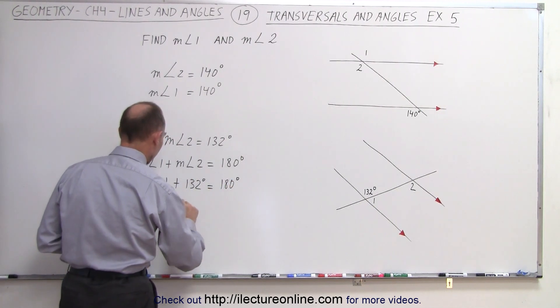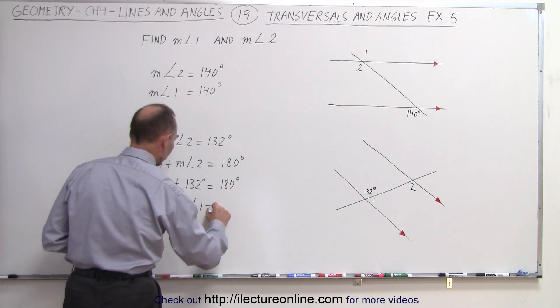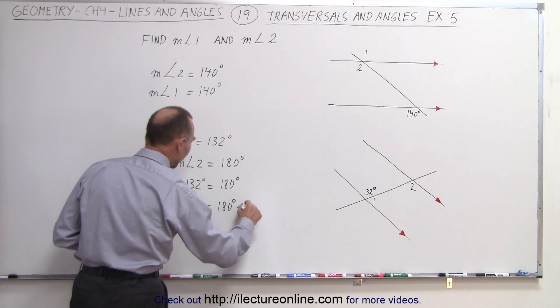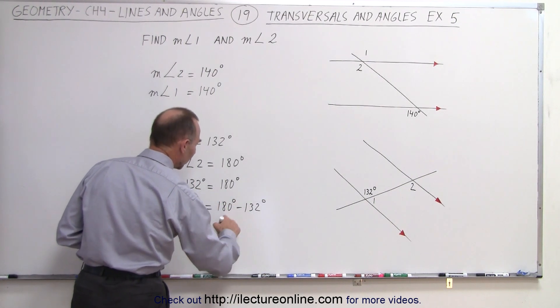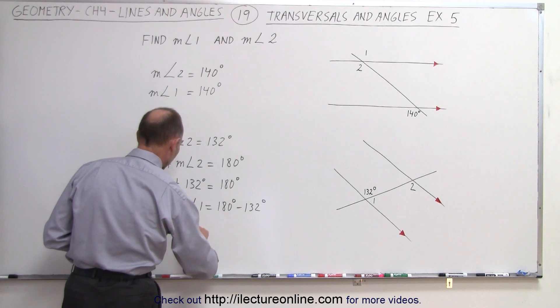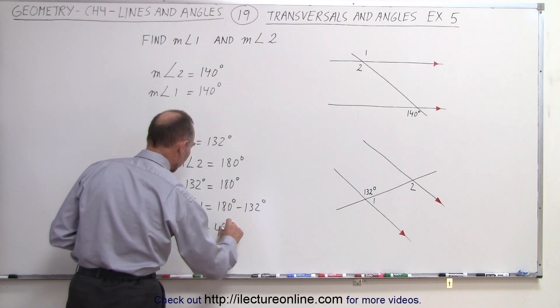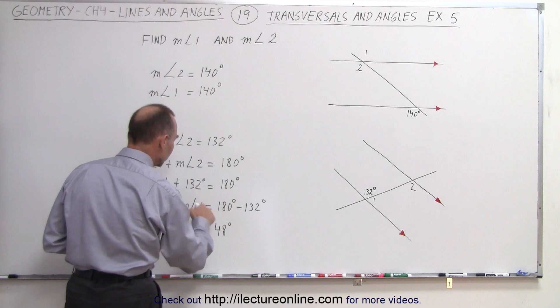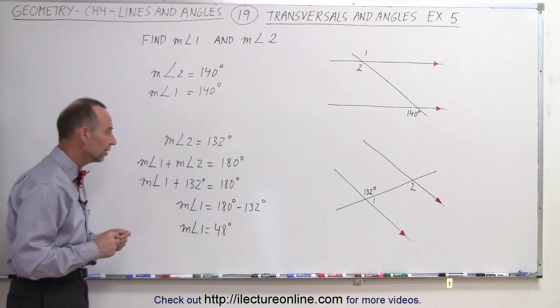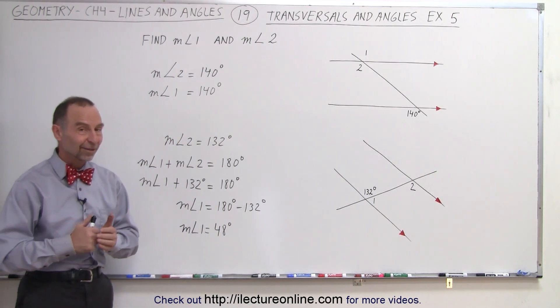Subtract 132 from both sides, so the measure of angle 1 equals 180 degrees minus 132 degrees. The difference is 48 degrees, so the measure of angle 1 equals 48 degrees. 48 plus 132 does indeed add up to 180, and that is how it's done.